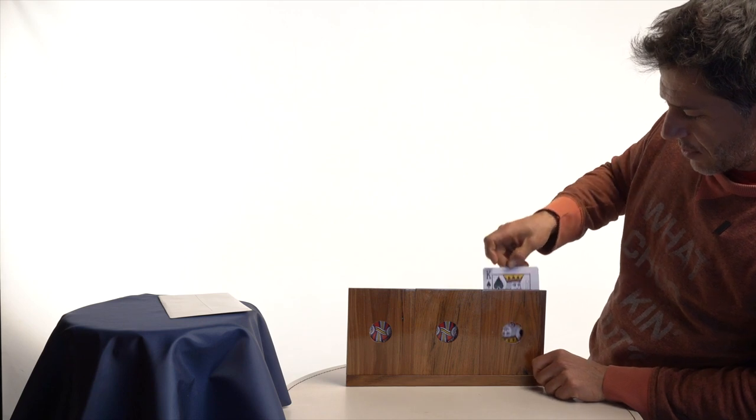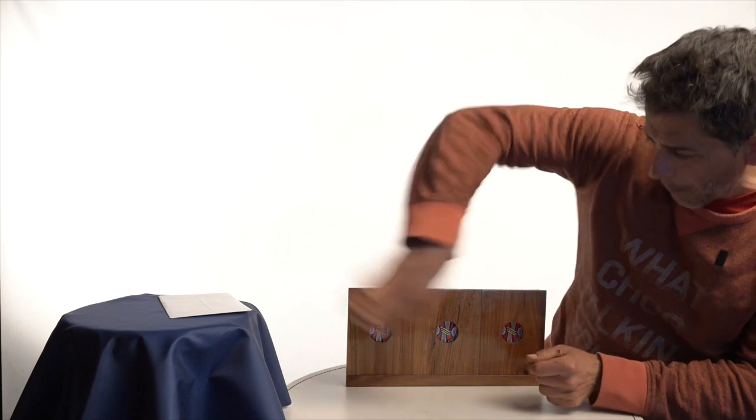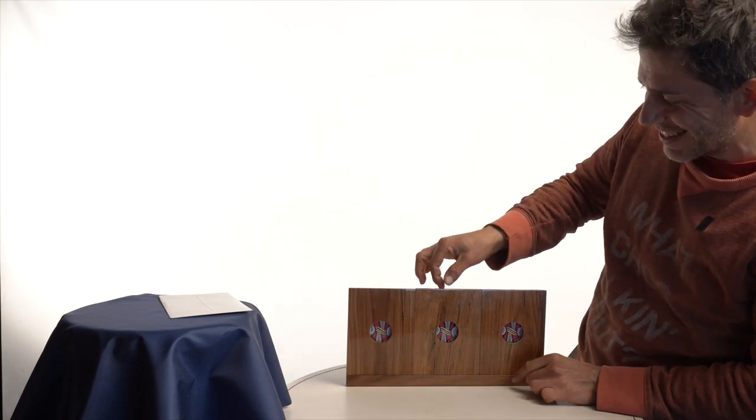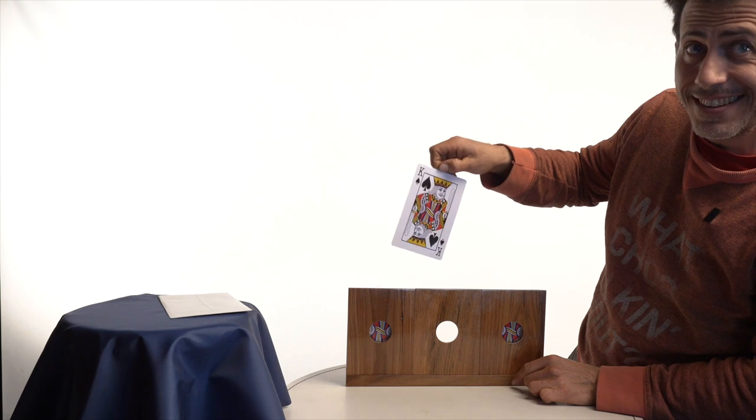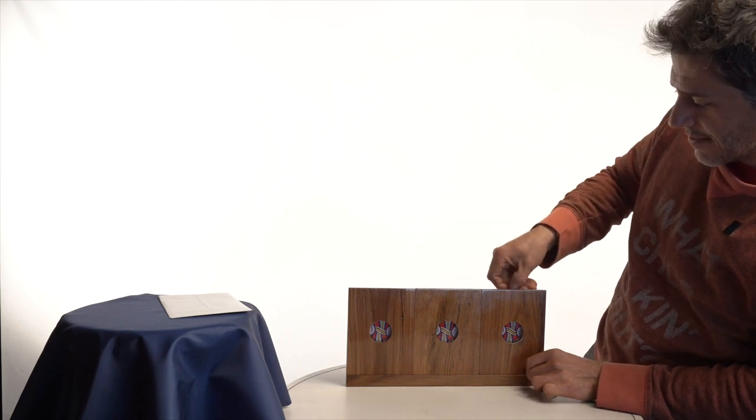So remember, the king is here and the queen is in the middle. But if I snap my fingers and misdirect you a little, the king is now in the center and the queen is right over here.